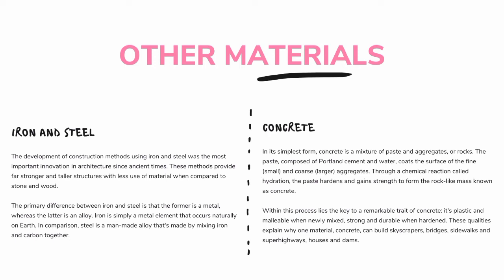Concrete. In its simplest form, concrete is a mixture of paste and aggregates, or rocks. The paste, composed of Portland cement and water, coats the surface of the fine (small) and coarse (larger) aggregates. Through a chemical reaction called hydration, the paste hardens and gains strength to form the rock-like mass known as concrete. It is plastic and malleable when newly mixed, and strong and durable when hardened. These qualities allow one material — concrete — to build skyscrapers, bridges, sidewalks, superhighways, houses, and dams.